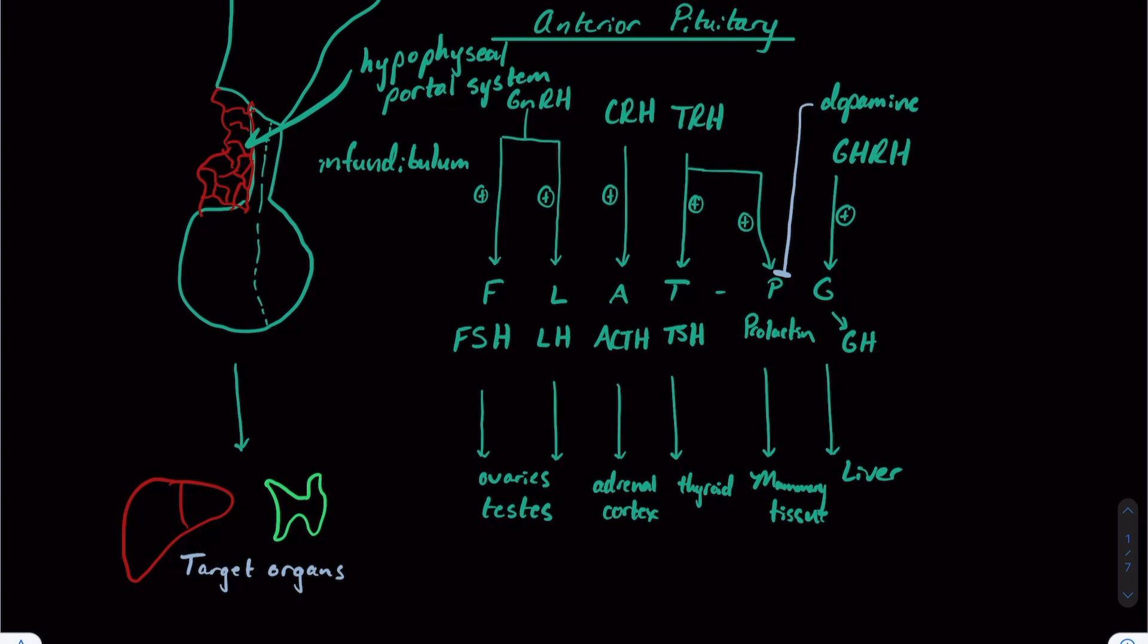Let's go over some of the other hormones that these target organs are going to produce. The ovaries and testes will release some of the sex hormones, such as testosterone and estrogen. The adrenal cortex primarily produces cortisol. Thyroid will produce thyroid hormone, primarily in the form of T3 and T4. The mammary tissue produces breast milk and the liver produces insulin-like growth factor one.